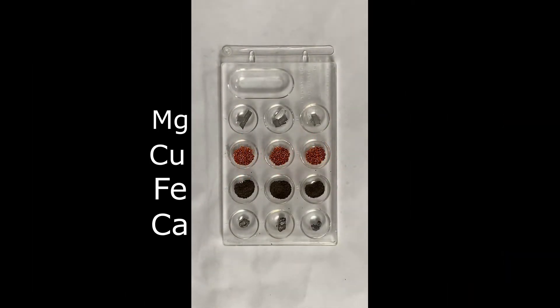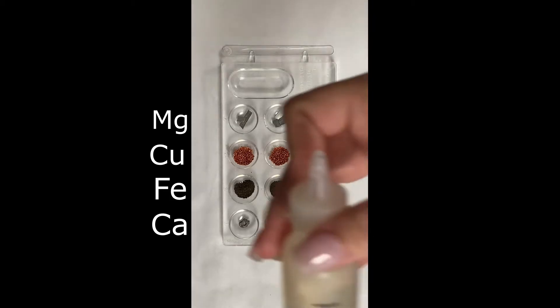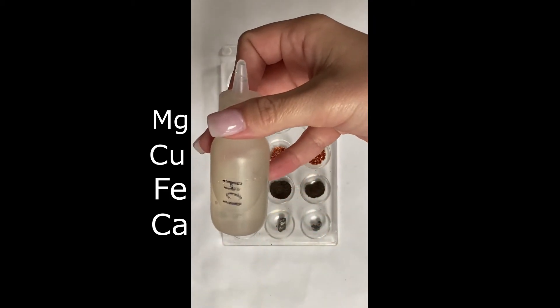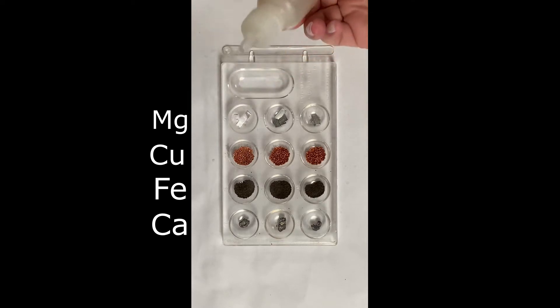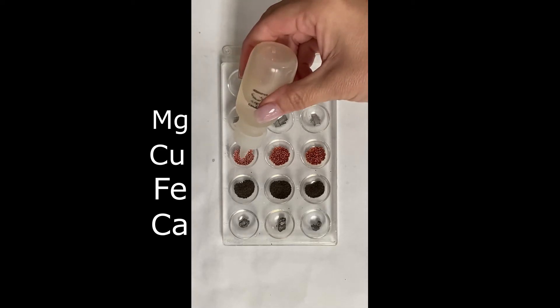Okay, so I went ahead and I labeled our metals for you. We put them in a little well plate. You don't need a whole lot of each sample. We're going to go ahead and start with hydrochloric acid, and we're going to go straight down the row so we can keep it nice and organized and neat, and we know which one is which.